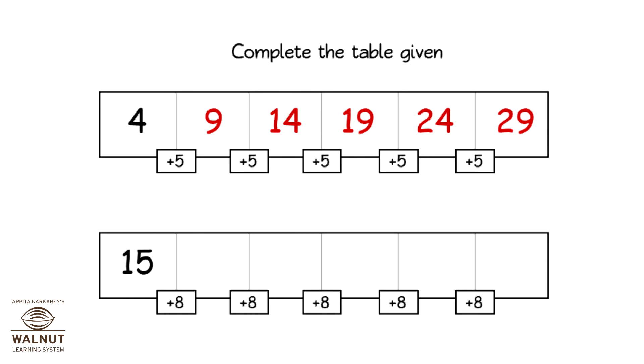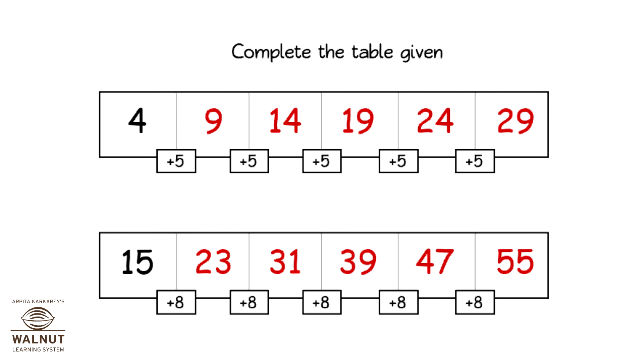Now let's skip count by eight, starting at fifteen: fifteen, twenty-three, thirty-one, thirty-nine, forty-seven, and fifty-five.